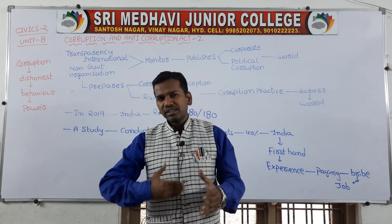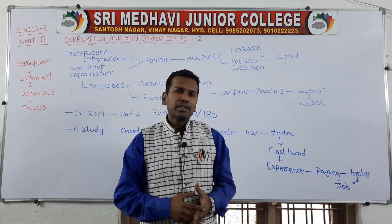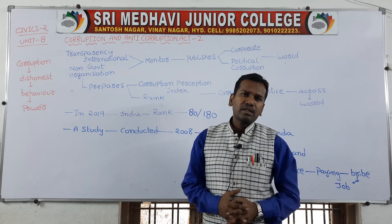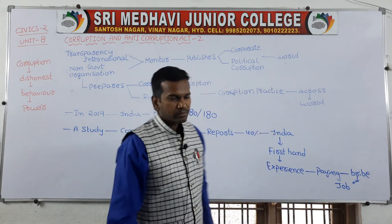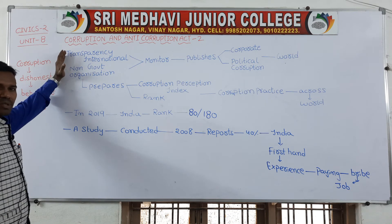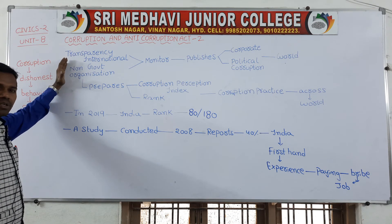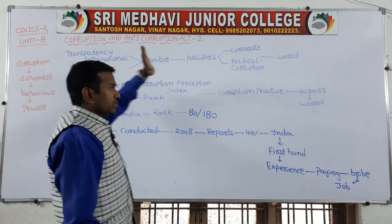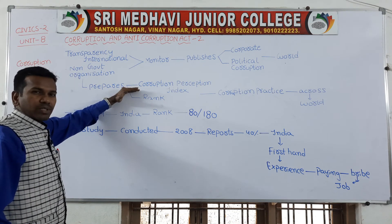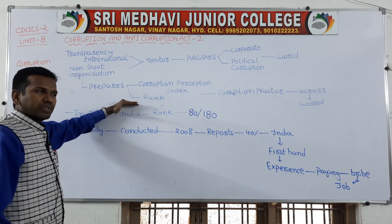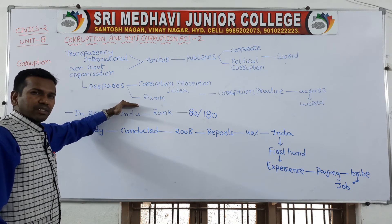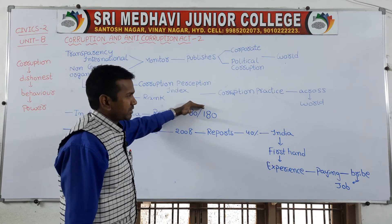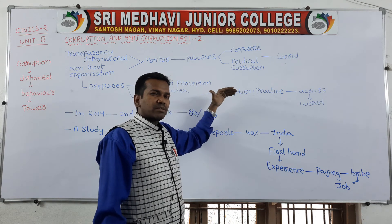Corruption is practiced in various fields including the police department, income tax department, sales department, and excise duty department, as well as village development offices. People in the highest positions from different offices are involved in corruption. Organizations like Transparency International and NGOs monitor these situations and publish reports on corporate and political corruptions. These non-government organizations prepare the Corruption Perception Index and publish rankings from all over the world.